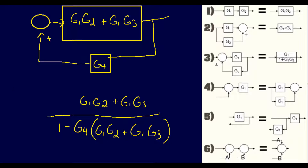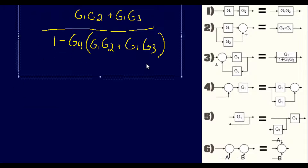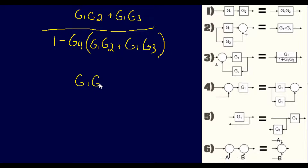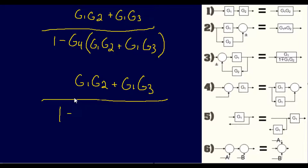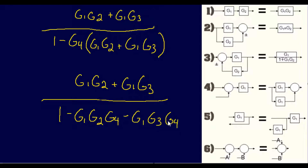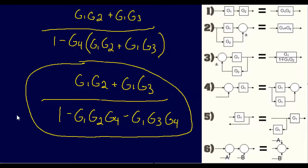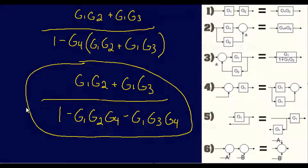This will not be the final answer you usually see — you typically have to simplify one more time. So we get G1 G2 plus G1 G3 over 1 minus, multiplying G4 times G1 and G2, giving negative G1 times G2 times G4, then negative times a positive gives negative G1 times G3 times G4. This is your final answer. And that concludes the examples for today.